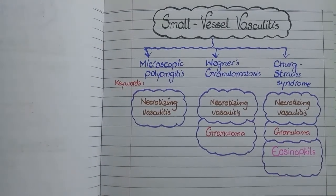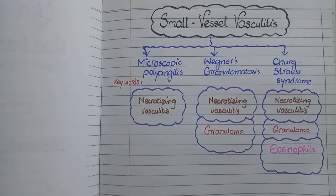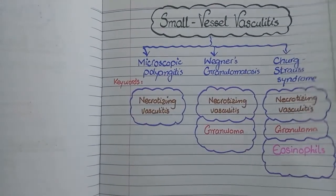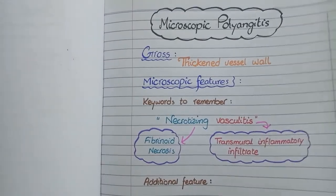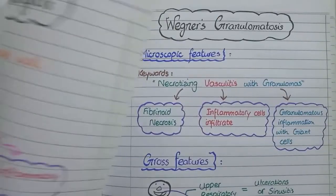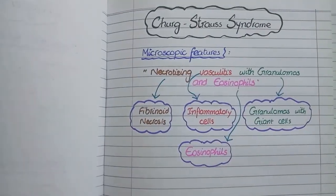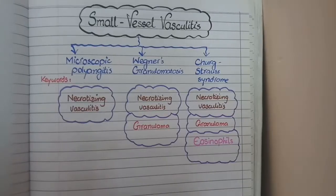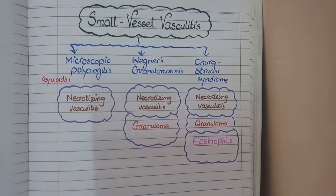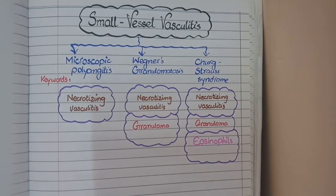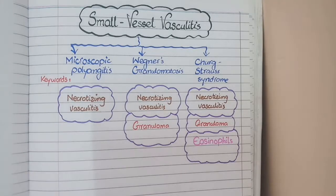We will study the pathological features of small vessel vasculitis, which include microscopic polyangitis, Wegener's granulomatosis, and Churg-Strauss syndrome. Before we move to the details of each of them individually, let us compare them in a single table. This tableau diagram will be greatly helpful for you to comprehend the differences in all types of small vessel vasculitis.